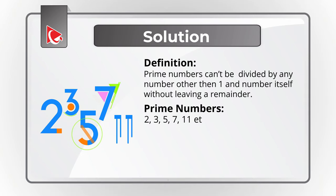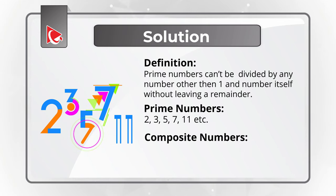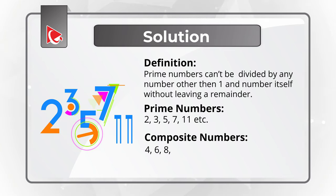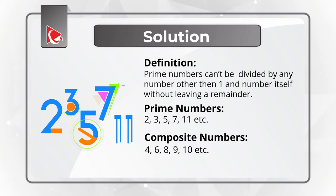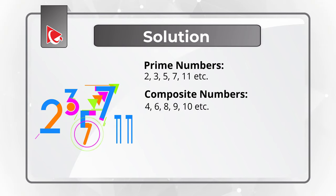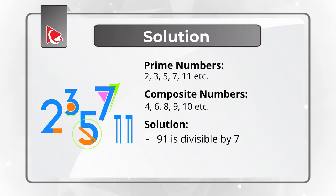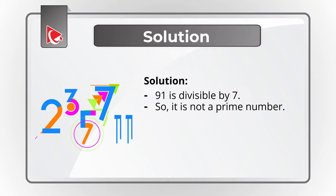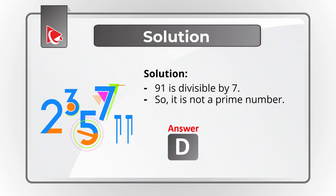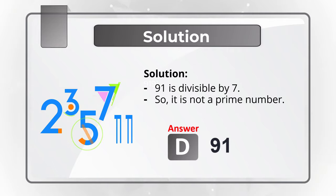The opposite of prime numbers are composite numbers. Examples would be 4, which can be divided by 2; 6, which can be divided by 2 and 3; 8, which can be divided by 2 and 4; 9, 10, and you can continue the sequence. As you might have figured out, out of the numbers presented, 91 can be divisible by 7. So 91 is not a prime number, which means the correct solution is Choice D, 91.